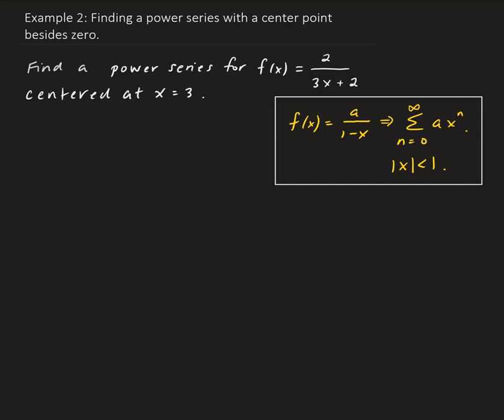In this example, we want to find the power series for the function given here, centered at x equals 3. We're going to go back to the idea of the power series in the box, which corresponds to the function a over 1 minus x. We want to find a geometric power series for the function given, but centered at 3.